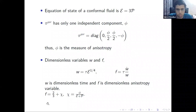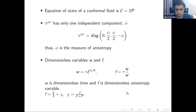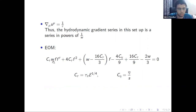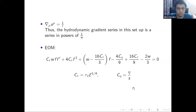The variable f can be shown to be proportional to the anisotropy variable phi and is dimensionless. The hydrodynamic series is just a series in powers of 1/w. The equations of motion for MIS theory in this setup reduce to one non-trivial first-order differential equation for f as a function of w, where c_theta and c_tau are dimensionless parameters containing the transport coefficients.